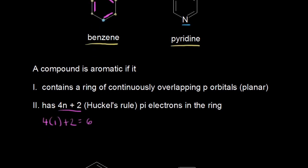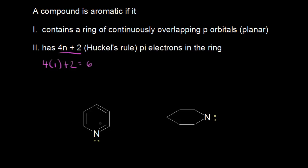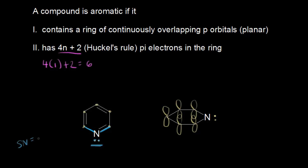Let's analyze pyridine in more detail. Here's the dot structure for pyridine. Pyridine has five carbons, and each of those carbons has a double bond to it, so each is sp2 hybridized, meaning there's a free p orbital on each of those five carbons. Now let's figure out the hybridization of the nitrogen atom using its steric number, which equals the number of sigma bonds plus the number of lone pairs of electrons. This nitrogen has two sigma bonds.